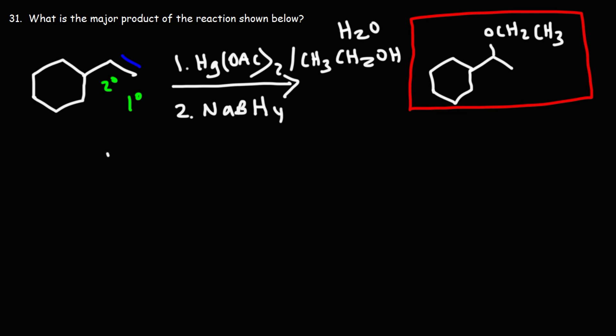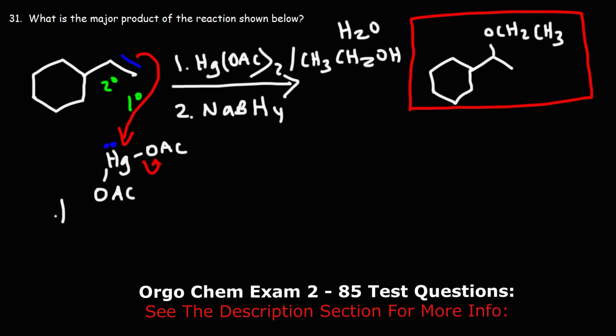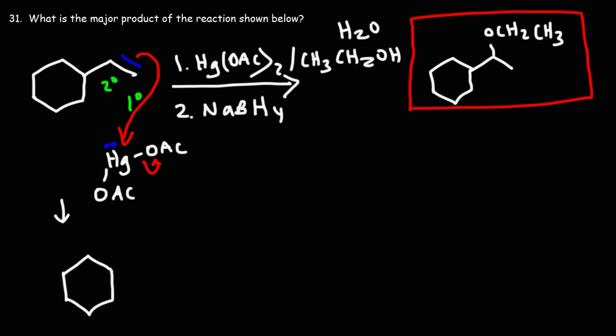Now here's one way you could show the mechanism. So here is mercury acetate. The double bond is going to attack the mercury and kick out one of the acetate groups. Now we're going to add the mercury on the primary carbon, so we get a secondary carbocation, which does not want to rearrange.